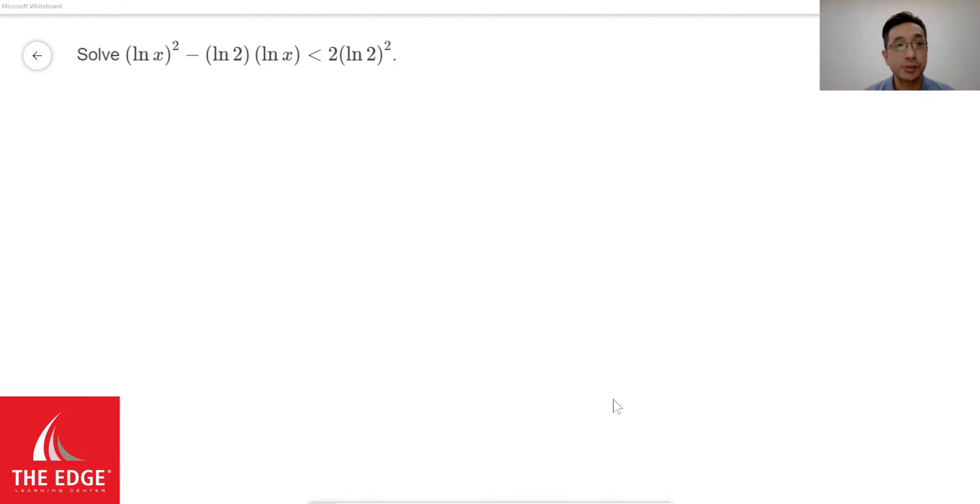The question asks us to solve the square of ln of x, so pay attention to square, it's actually involving the whole ln of x, minus bracket ln of 2 times bracket ln of x, which must be less than 2 times bracket of ln of 2 whole thing squared.